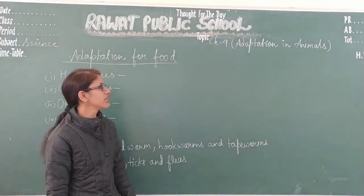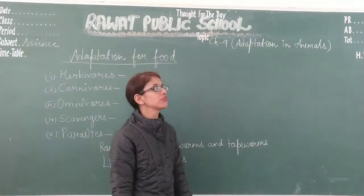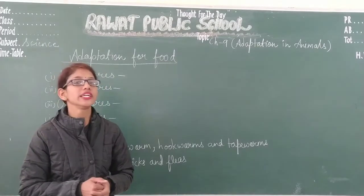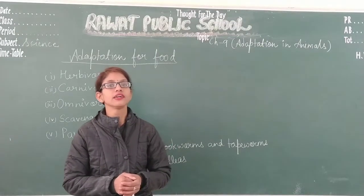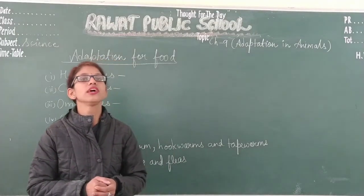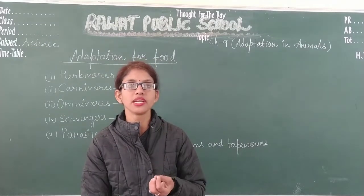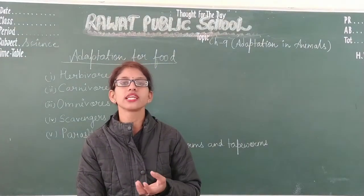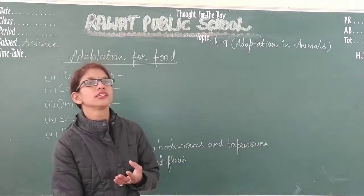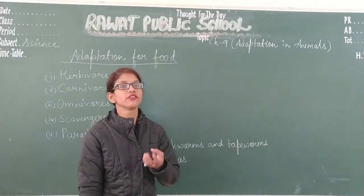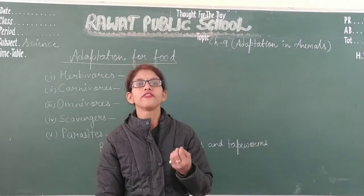Good morning students, I hope you all are well. As we have started our chapter 9, that is adaptation in animals. In this chapter we have discussed that adaptation is very necessary for all the animals to remain alive, to remain in their surroundings, to remain in their natural habitat. All the animals adjust themselves to their environment for food and to protect themselves from their enemies. The habitat of the animals is classified into 5 types.